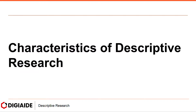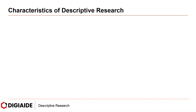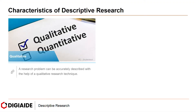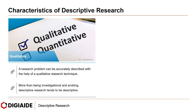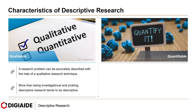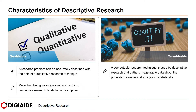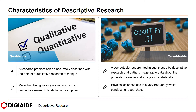Moving on to the characteristics of descriptive research. First, qualitative: a research problem can be accurately described with the help of qualitative research technique. More than being investigational and probing, descriptive research tends to be descriptive. Next, quantifiable: a computable research technique is used by descriptive research that gathers measurable data about the population sample and analyzes it statistically. Physical science uses this frequently while conducting researches.